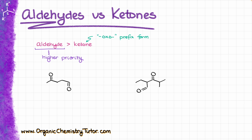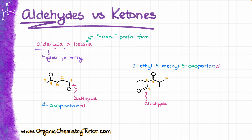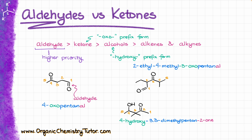So, for instance, in these two molecules, the one on the left is going to be 4-oxopentanal, and the one on the right is going to be 2-ethyl-4-methyl-3-oxopentanal. Notice how I alphabetize everything including my oxo prefix. Now, in terms of priority, aldehydes and ketones are above alcohols and pi bonds. So, if your molecule has all of the above, you'll still have to prioritize the aldehyde or a ketone for the purposes of the numbering. For instance, over here I have 4-hydroxy-3,3-dimethylpentanal, and I have prioritized my carbonyl over the alcohol for the purposes of the nomenclature and numbering, using hydroxy as the prefix form for the OH.